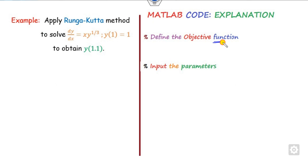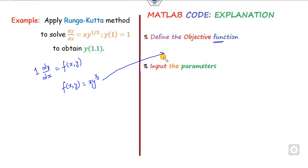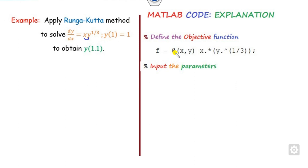What is the function? You need to compare your ODE and ensure the coefficient of dy/dx is 1. In this example, the value of f(x, y) is x times y raised to the power 1/3. This part you have to write in the code. So the function is dependent on both x and y, written as x times y to the power 1/3.